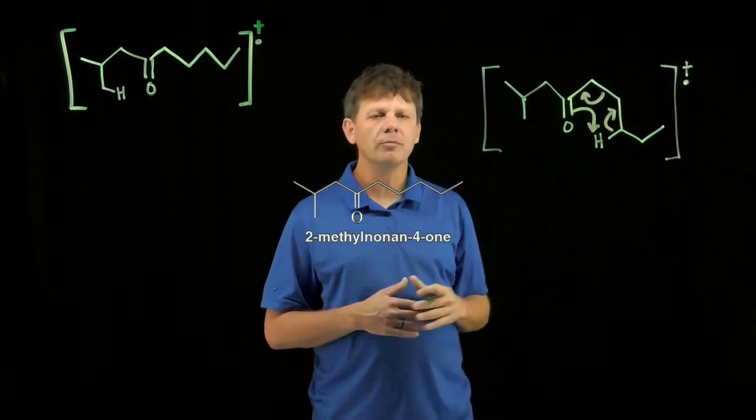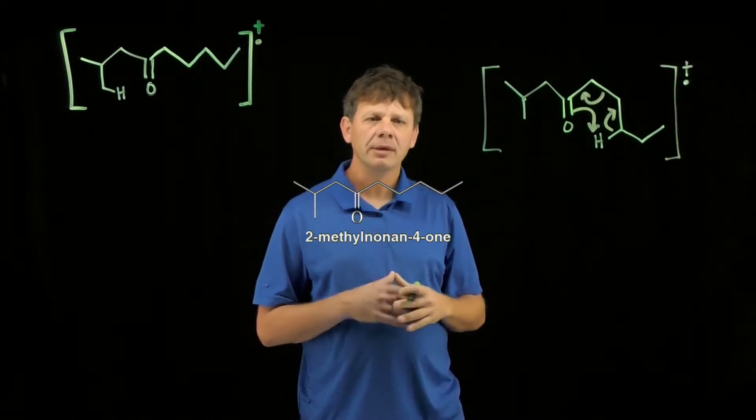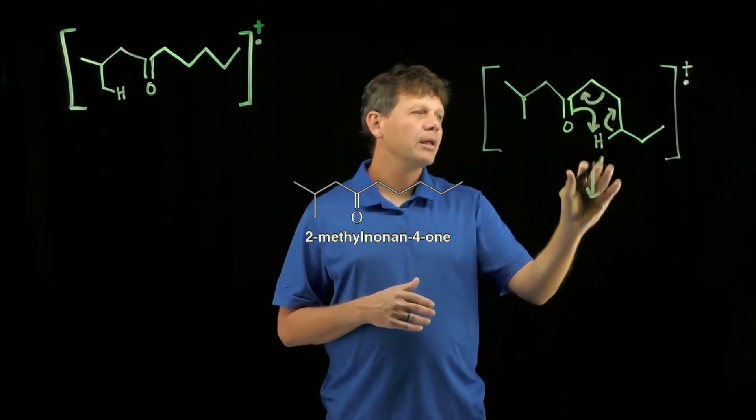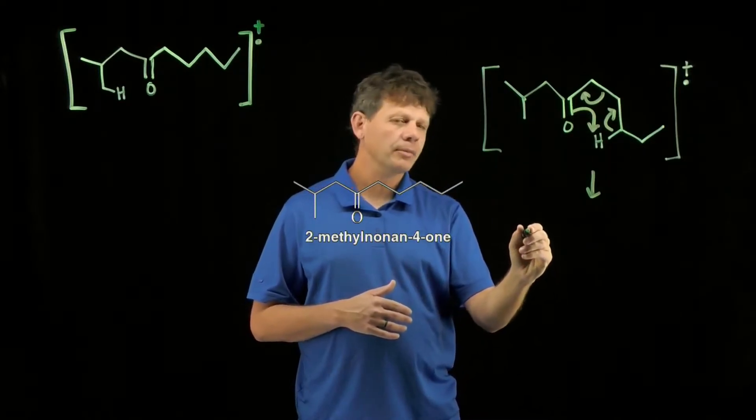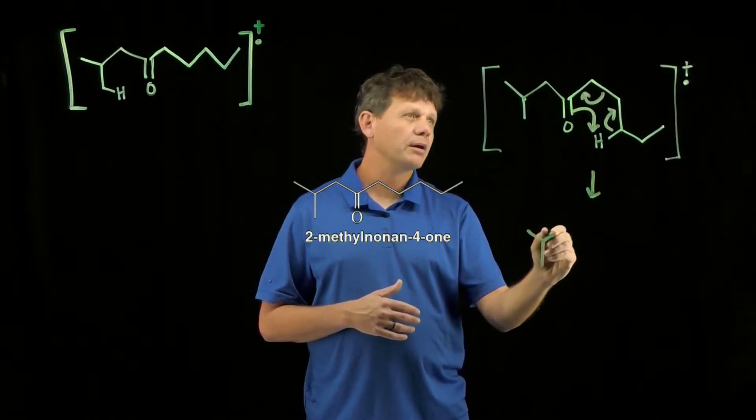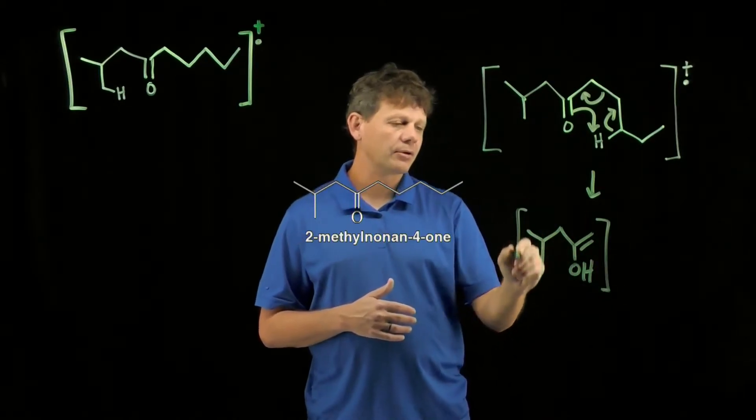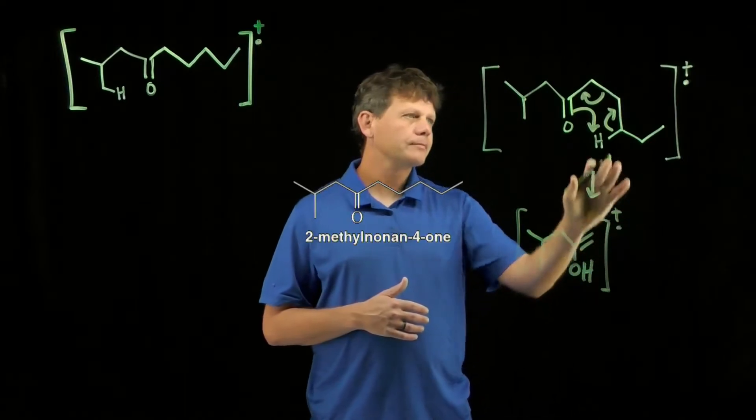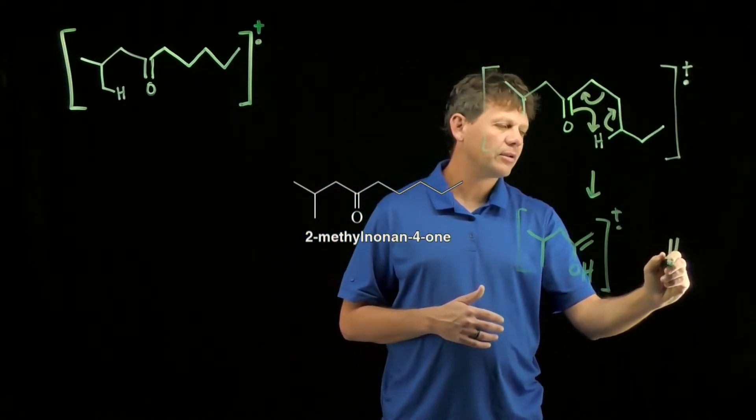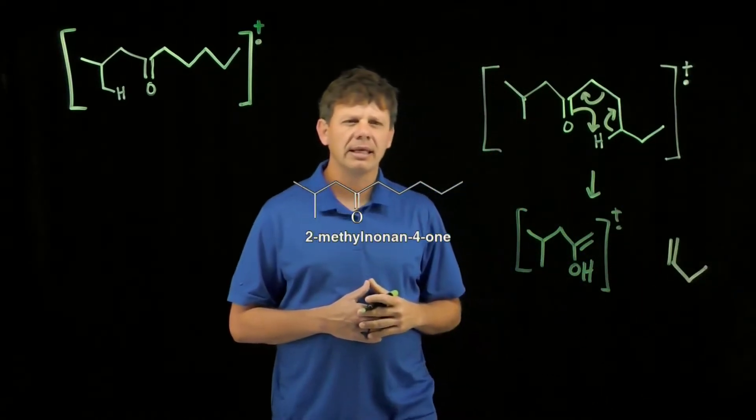We get the movement of those six arrows, and we know that arrows tell a story. The story they're telling here is going to be the formation of this enol, which remains as the radical cation, and this neutral alkene.